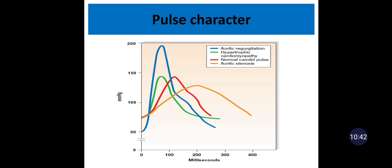In aortic regurgitation, the left ventricle receives blood from the pulmonary veins during diastole and also from the aorta due to regurgitation. Because of this, it has a high end-diastolic volume and high stroke volume, creating a rapidly rising carotid pulse that collapses early due to the aortic insufficiency. The yellow line represents aortic stenosis, which creates a slow-rising carotid pulse. Due to the obstruction, it restricts the rate of ejection of blood from the left ventricle, creating a slow-rising carotid pulse.